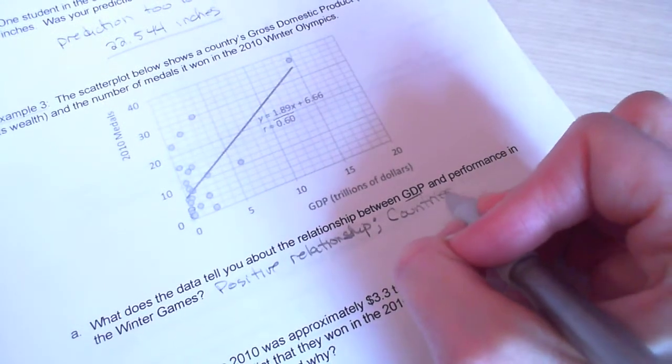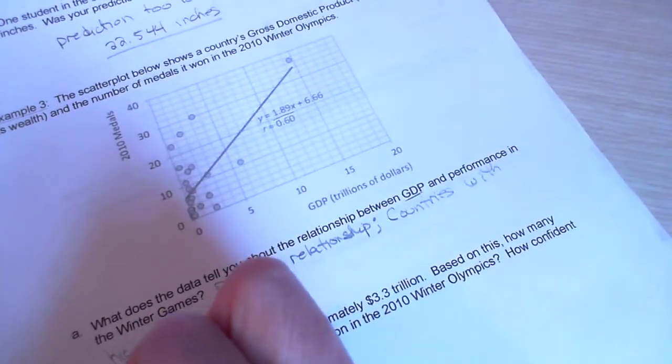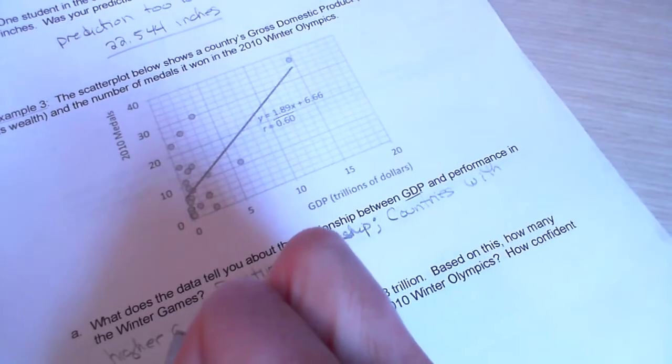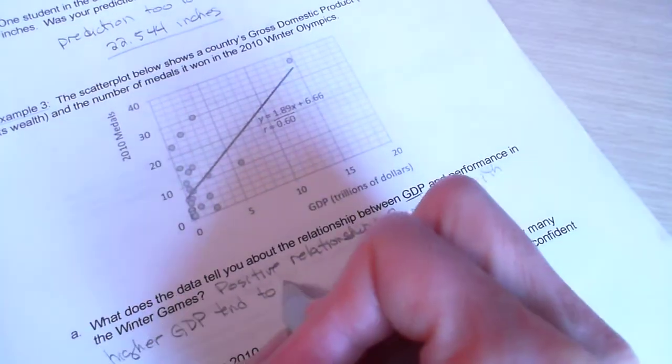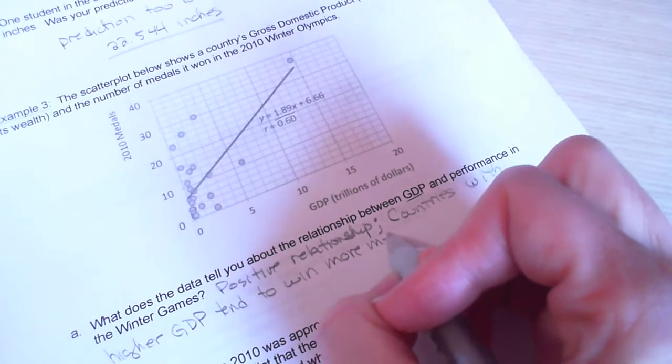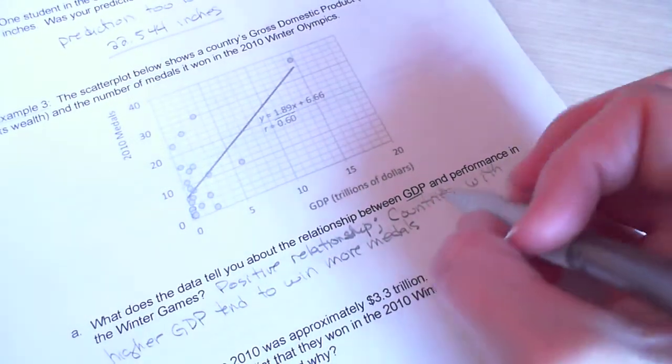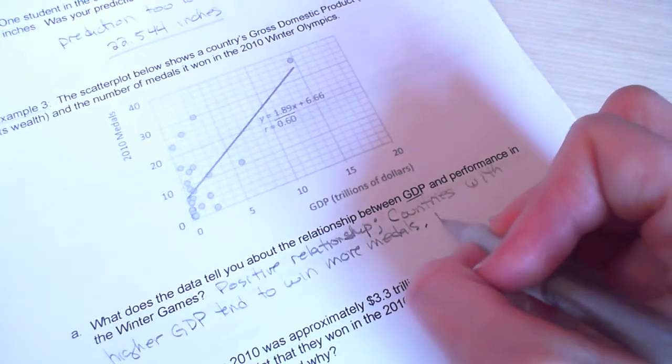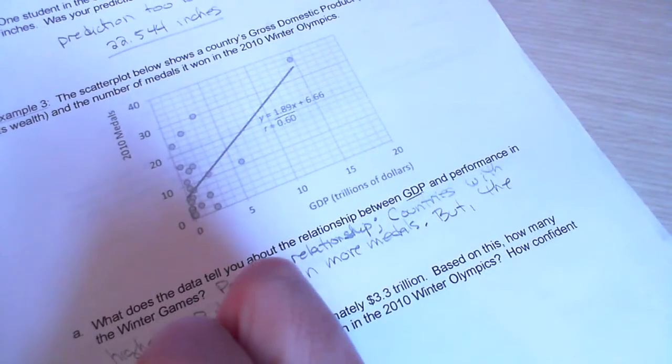Countries with higher GDP tend to win more medals. At least in the Winter Games. But, or you could say however, the relationship is not very strong.